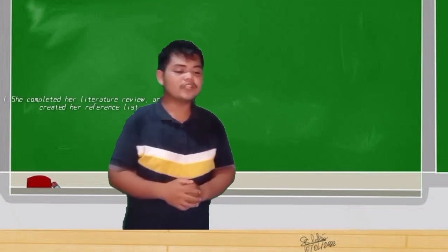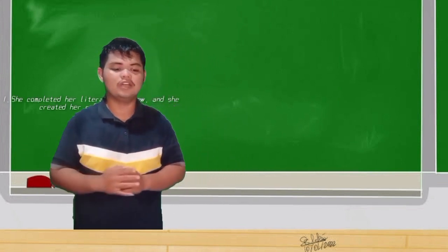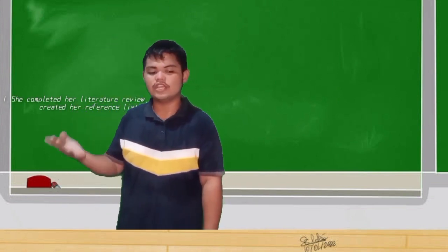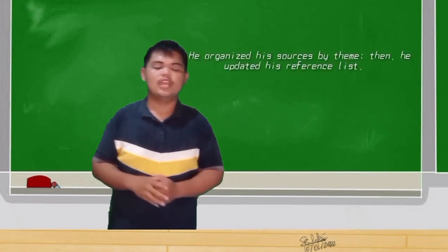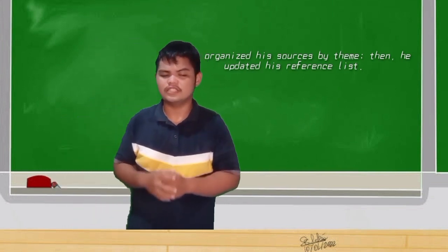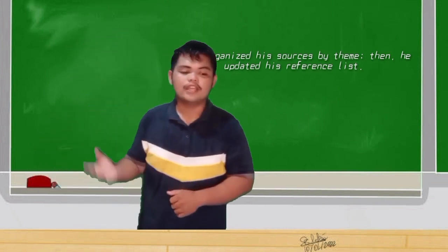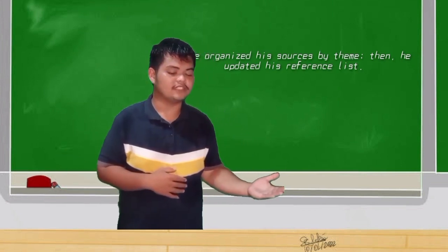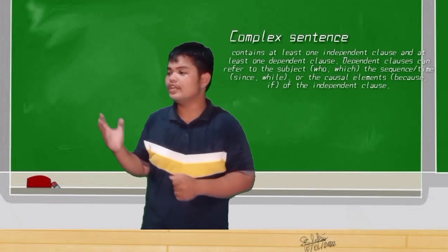For example: 'She completed the literature review, and she created a reference list.' The first independent clause is 'she completed the literature review,' connected by a comma and the coordinating conjunction 'and,' then the next independent clause is 'she created a reference list.' Second example: 'He organized his sources by theme; then he updated his reference list' — connected by a semicolon.